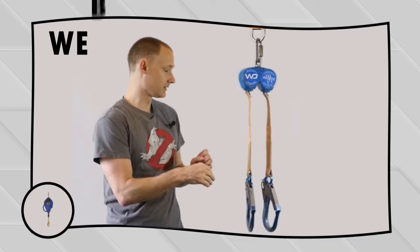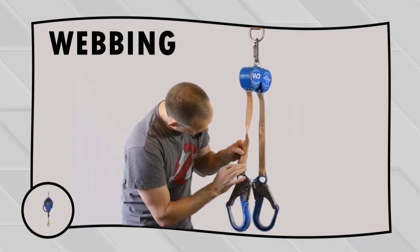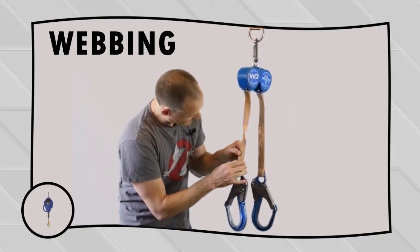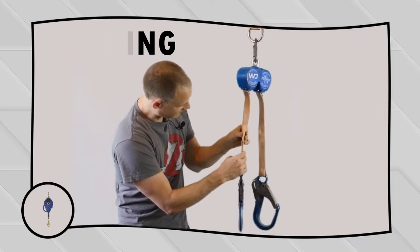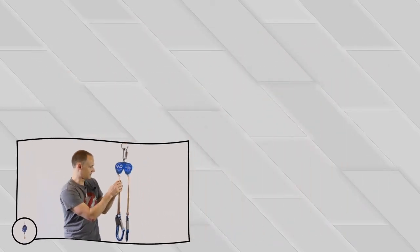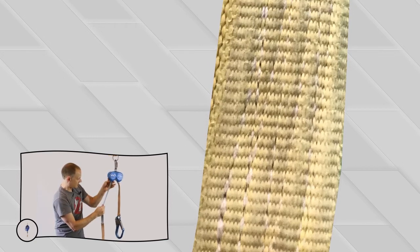So now let's inspect the webbing. You can see here it's old, it's a little bit worn. There's some dirt here. That concerns me. It looks like there's some grime and dirt, maybe a little oil there. But you want to inspect the webbing, make sure there's no broken stitching, cuts, nicks, all that type of stuff.